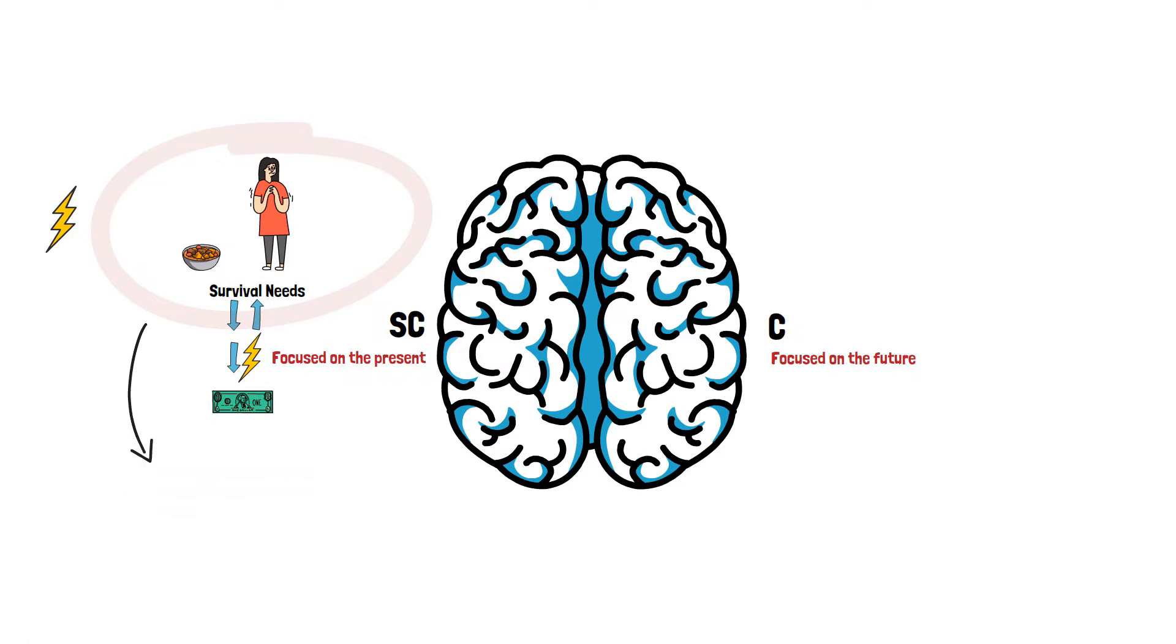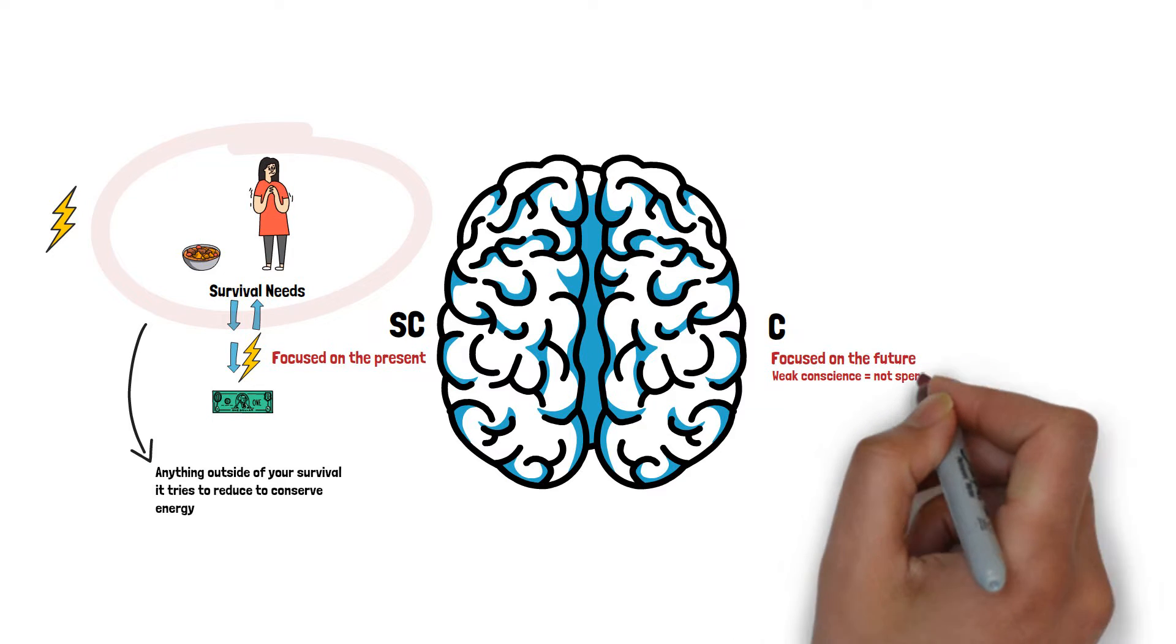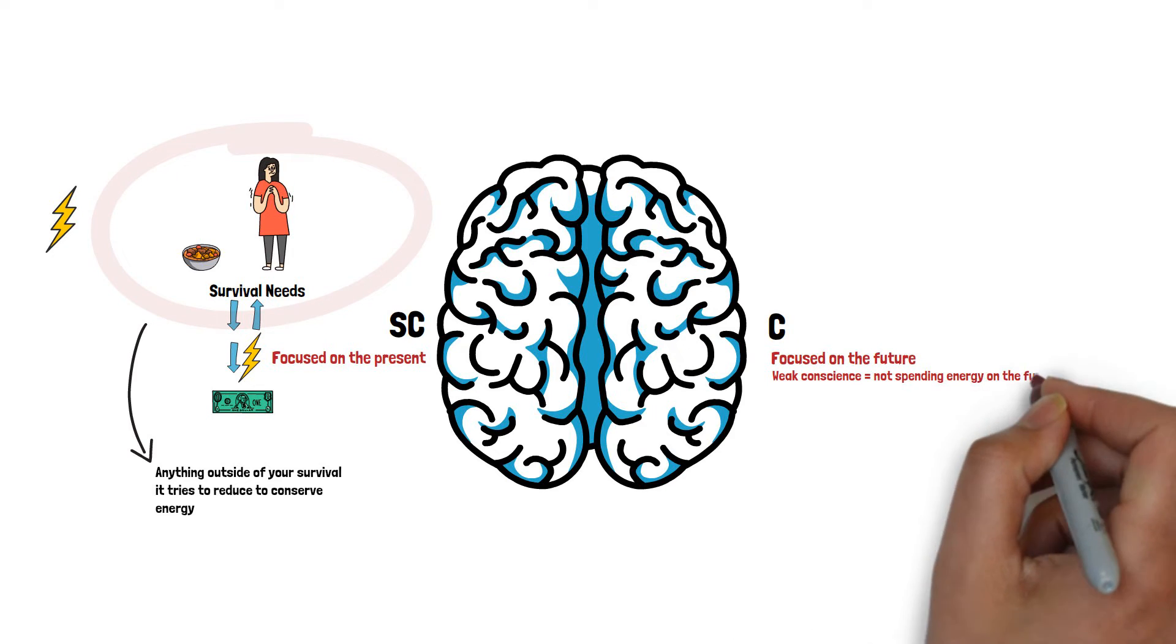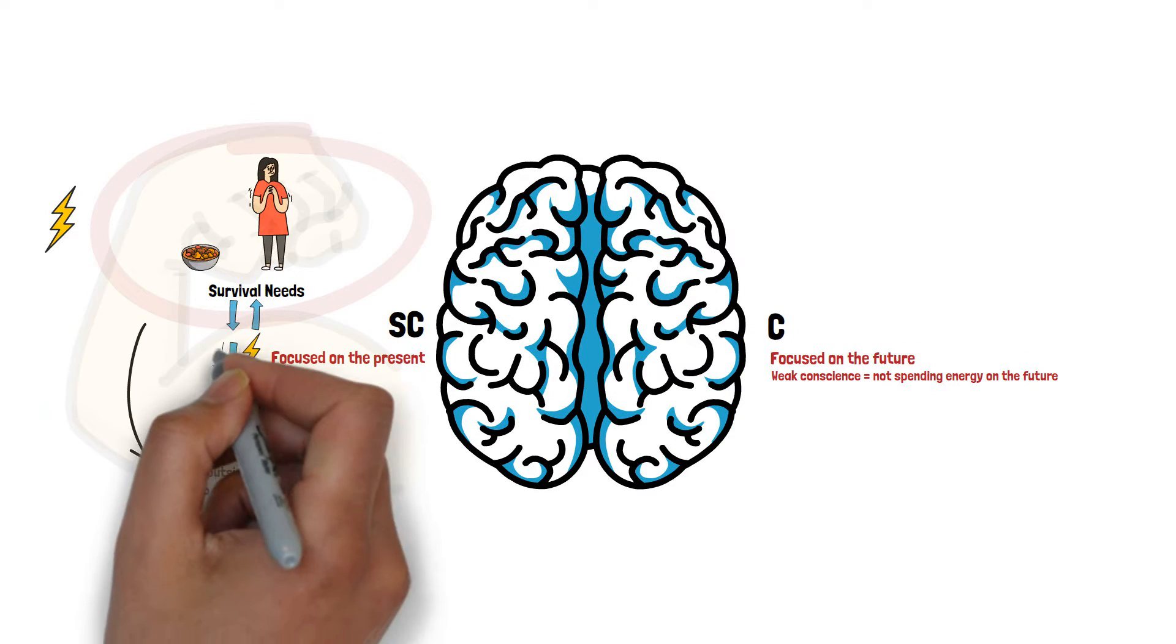There is nothing wrong with this system. You want your subconscious optimizing for the most efficient way to live. The problem is when your conscience is weak and is not actively spending energy on your future, the subconscious gets too strong and creates habits and systems to reserve more and more energy.